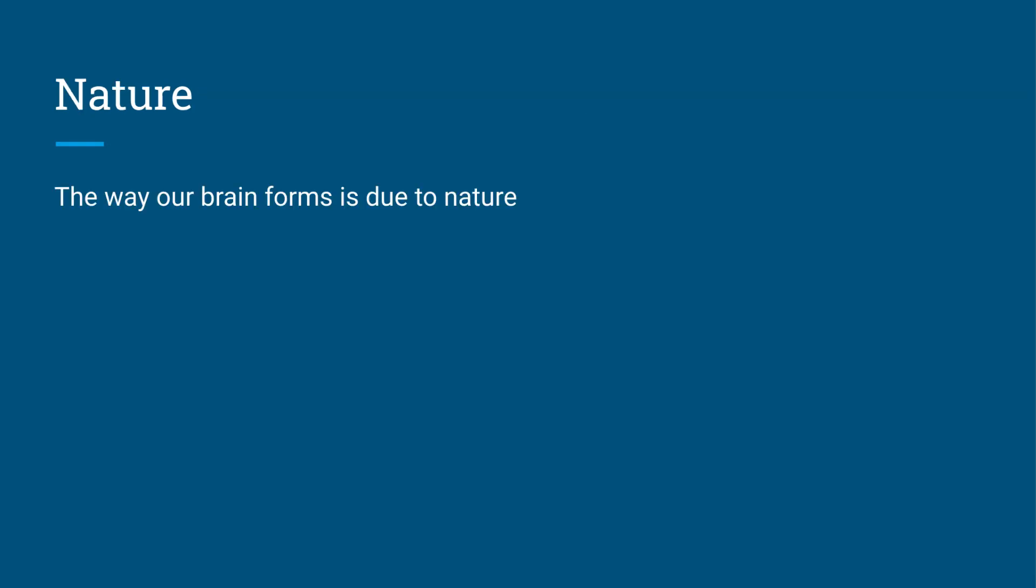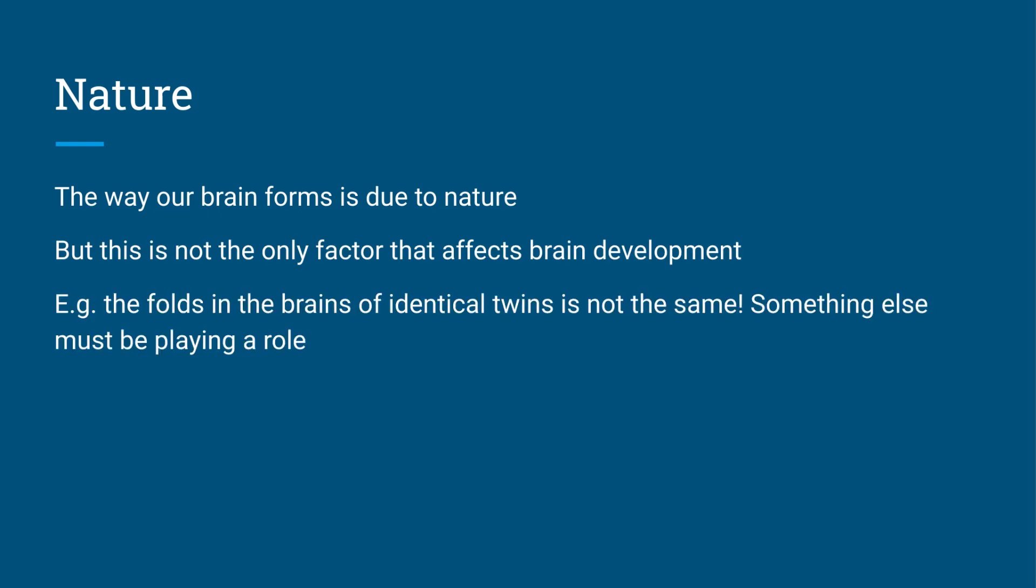Now regarding nature, the way our brain forms, which we discussed at the start, all these things that happen at different weeks, it is due to nature. It's what happens biologically, but it's not the only factor that will affect our brain development. For example, the folds in the brain or the cortex of identical twins is not the same. So therefore, something else must be playing a role that changes our brain development.